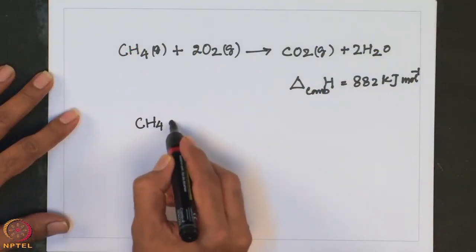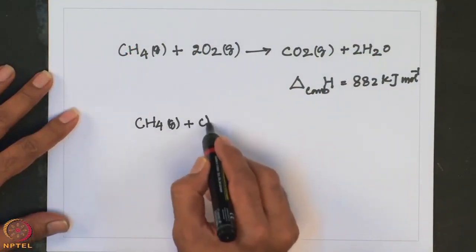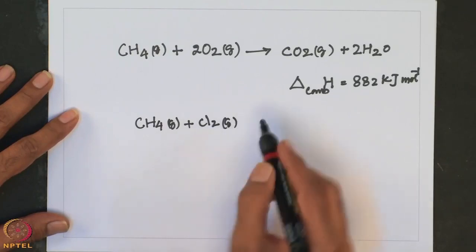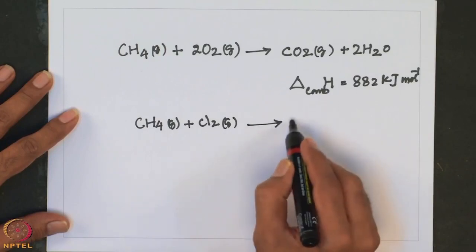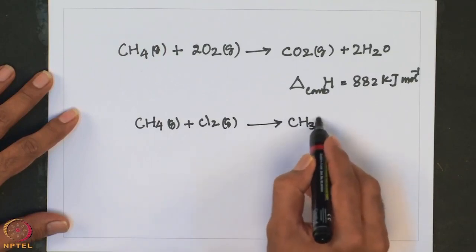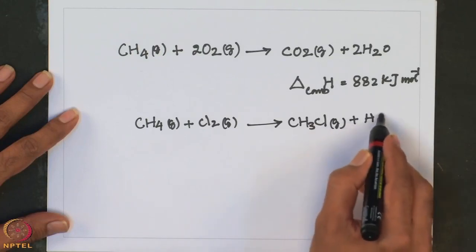Methane is not hydrolyzed by water and reacts with halogens only when exposed to ultraviolet radiation, involving a radical mechanism. For example, CH4 gas reacted with Cl2 under photochemical conditions gives CH3Cl with the formation of HCl.